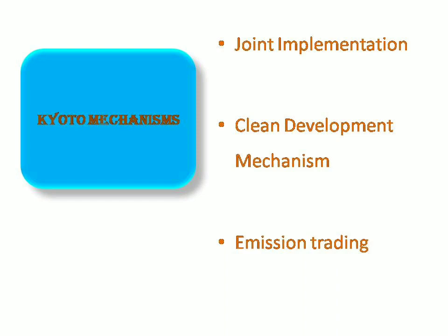In Emission Trading, if a particular country exceeds its limit of greenhouse gas emission, they can purchase carbon credits from another developed country. Carbon credits are the units of greenhouse gases each country is allowed to emit. If country A gives five carbon credits to country B, then five carbon credits will be cut down from country A's quota or limit, and country B can thereby escape from their penalty. So these are the mechanisms under the Kyoto Protocol. We have discussed the major details of the Kyoto Protocol in this video. Hope this was helpful for you. Thanks for watching and bye.